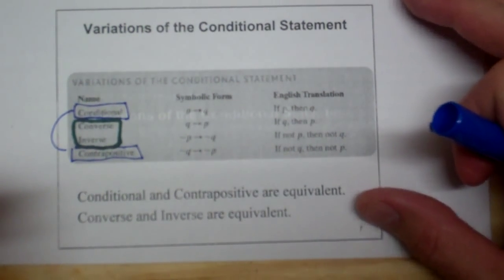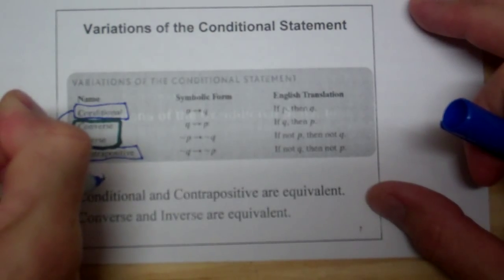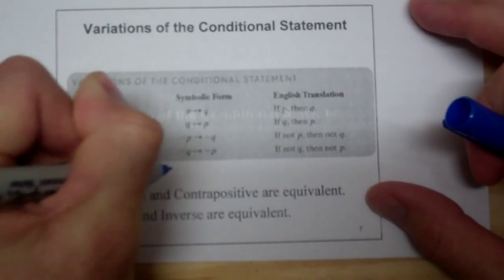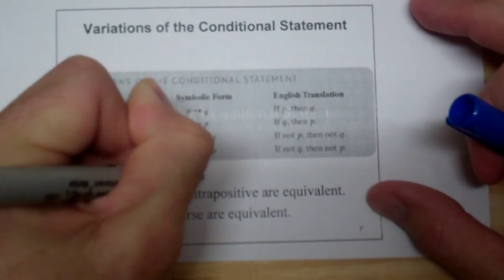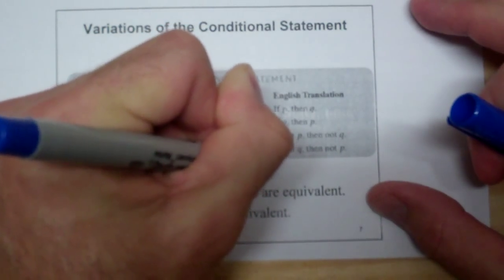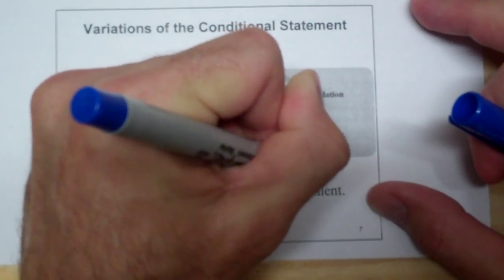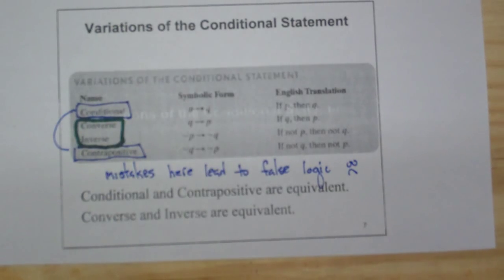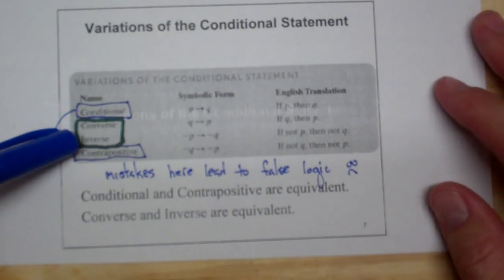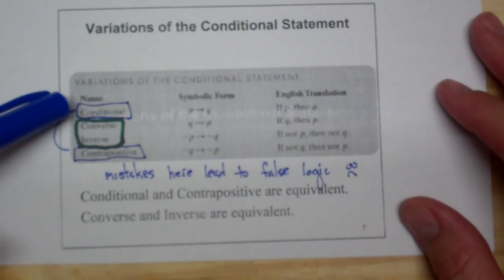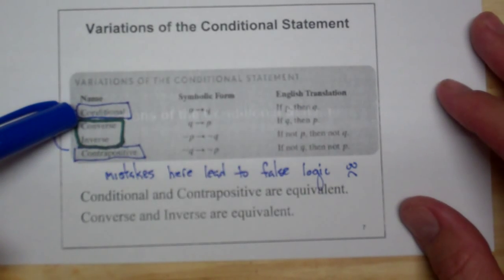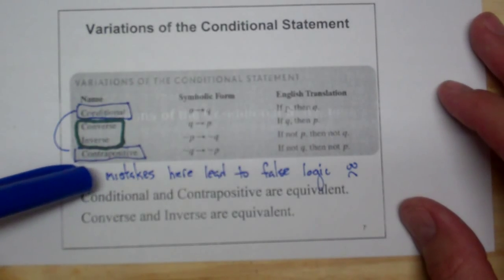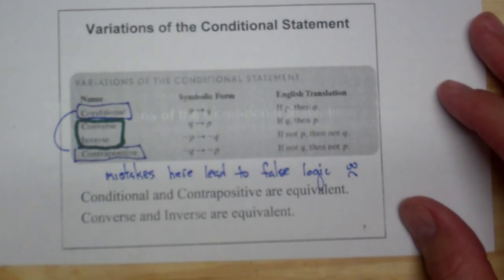You have to be very careful because mistakes here lead to false logic. The converse and the inverse are the logical mistakes that most people make from conditional statements. Those are not the same as the original conditional, and it is not true for all of our logic.